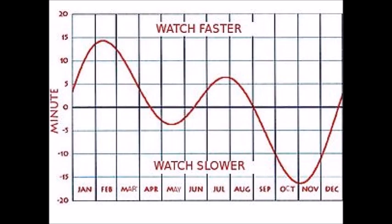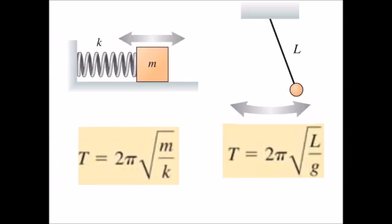A better idea might be to use some physical system, like a mass on a spring or maybe a pendulum, and those ideas have been tried. They have some problems — how are you going to make sure the springs are the same, or the lengths of the ropes are the same, or that you're using the same acceleration due to gravity, which could vary depending on where you are on Earth? A physical system that's better than a mass on a spring or a pendulum could be the cesium atom.